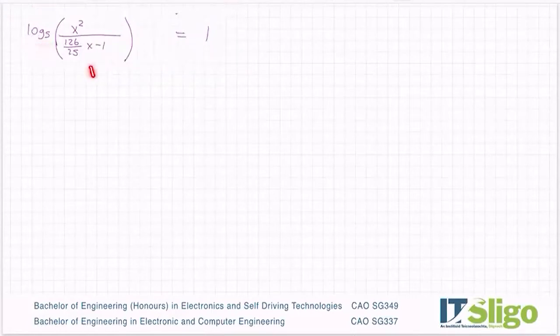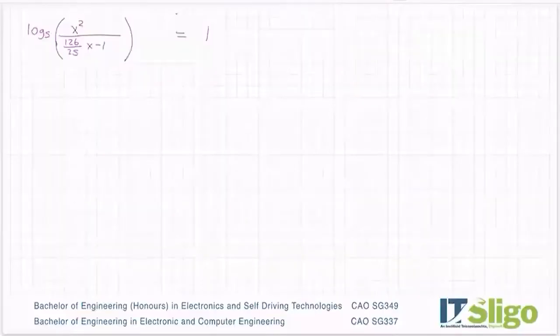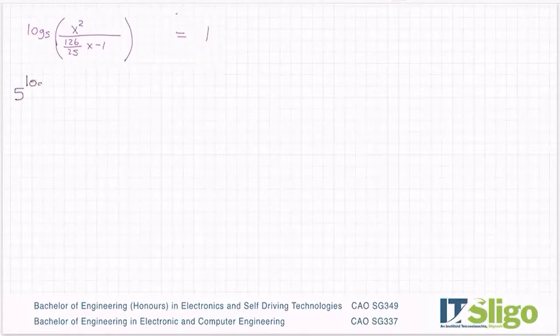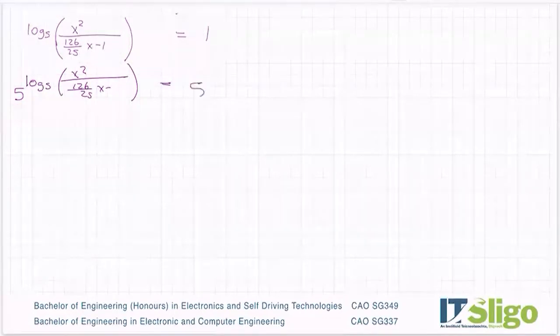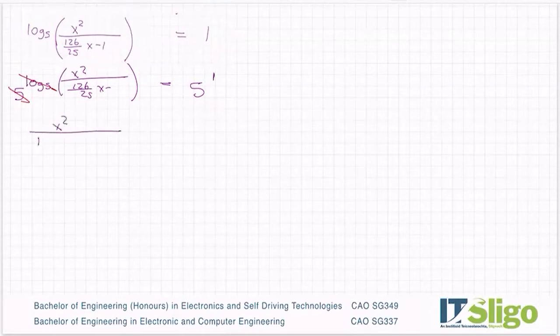So the next thing I'm going to do is get rid of log to the base 5 because I need to get at the X's and this is on the outside. So I'm going to use, of course you can use the switch, but I'm going to use these two rules here. So I'm going to match the base number which is 5 and raise everything up. And of course if I raise this side I need to raise this side up. So I've literally taken the left and put it as the power of 5, I've taken the right and put it as the power of 5. And the reason we do that is because log 5 and 5 cancel. So that now I'm left with X squared over 126 over 25 X minus 1 is equal to 5 to the power of 1 is 5.